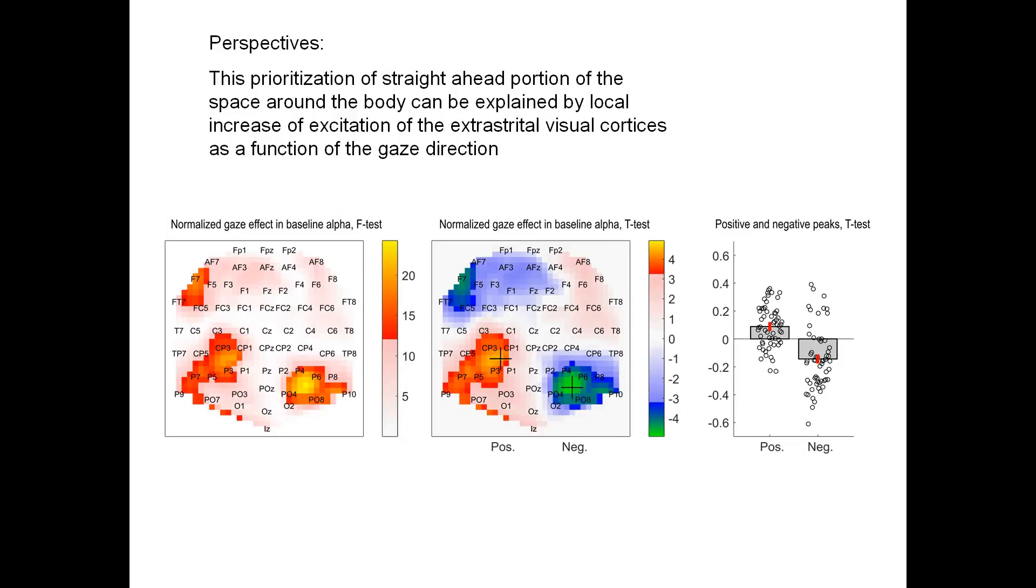And the perspectives of this study, they are cool and exciting. Apparently, this prioritization of straight-ahead portion of the space around the body can be explained by local increase in excitation of the extra-striate visual cortices as a function of the gaze direction. What I did in order to achieve those images was a very basic Fourier transform. Spectral amplitude for 10 hertz estimation. Didn't fight much with the noise, just quick and dirty.